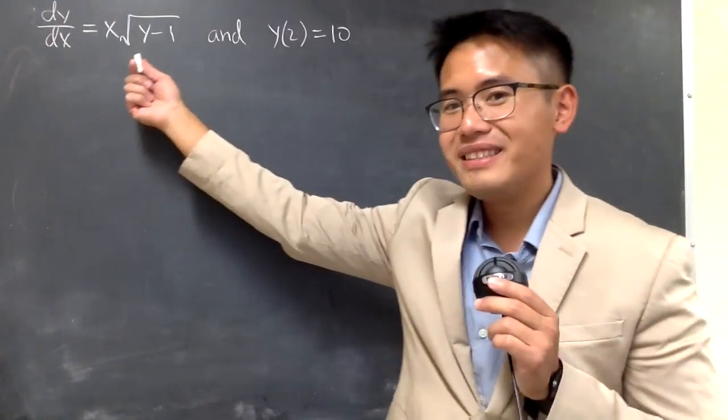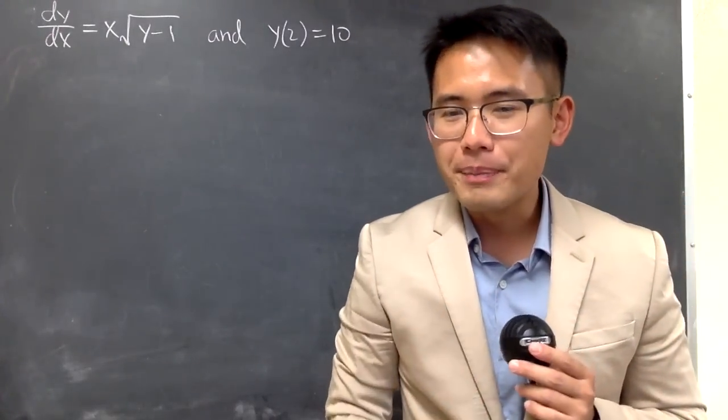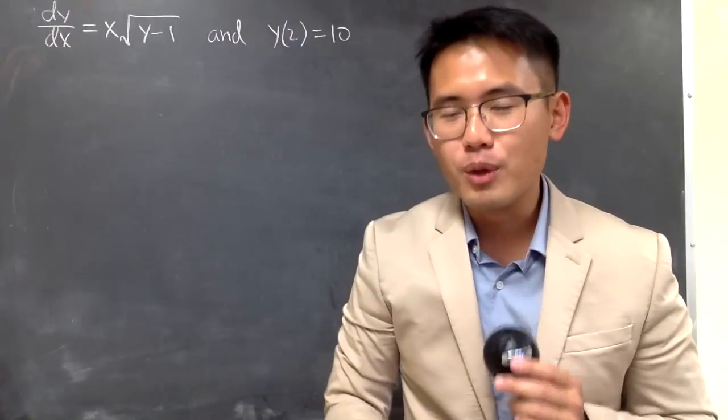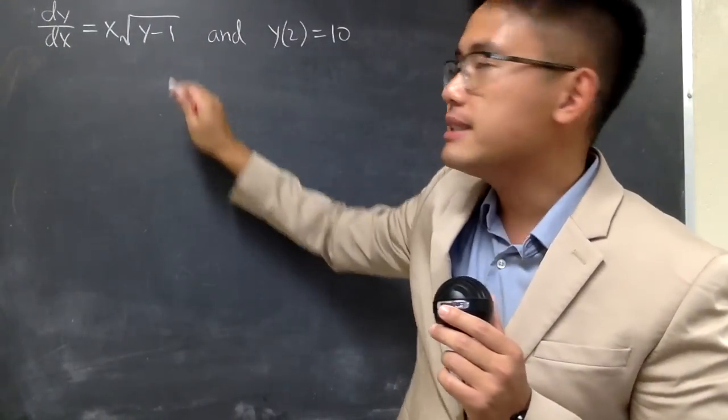Okay, we are going to solve this differential equation along with this initial condition. This is not that bad because we can just separate the variables. Let me show you. First of all, let's multiply dx on both sides.